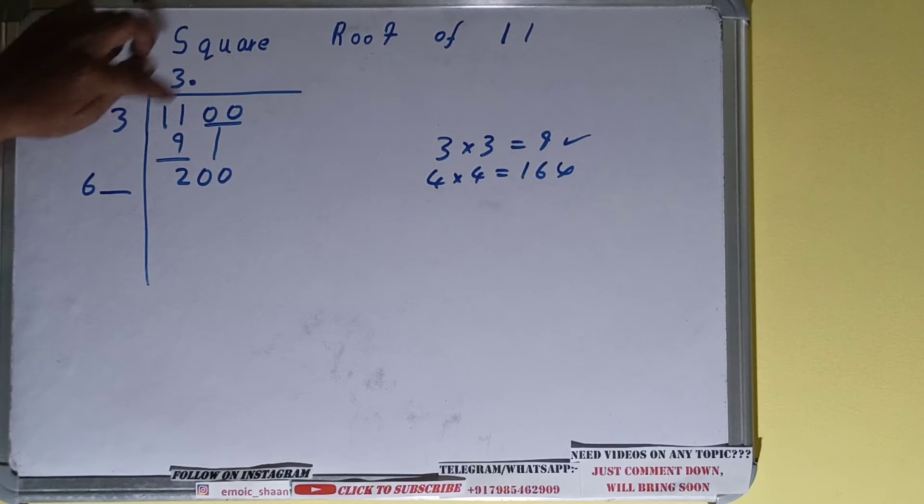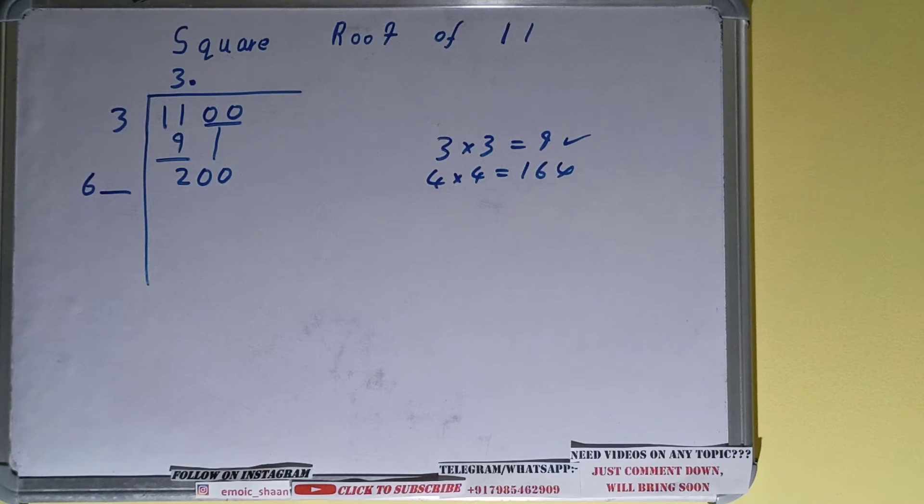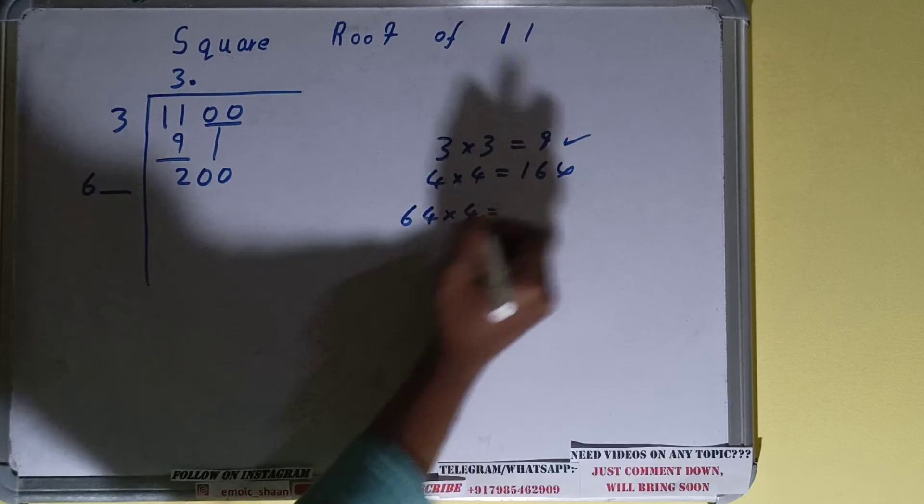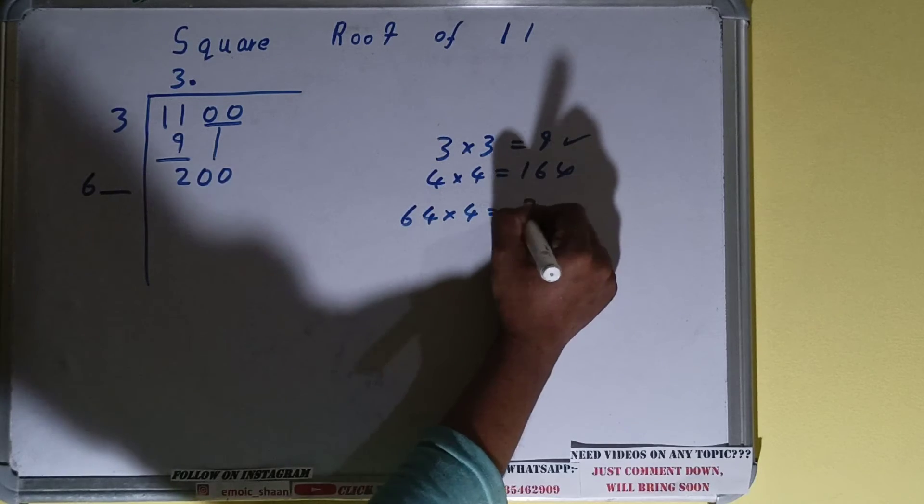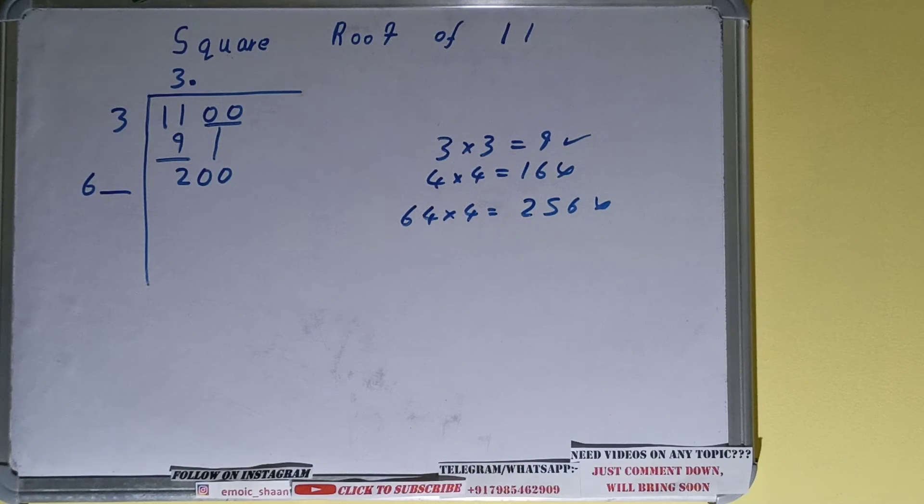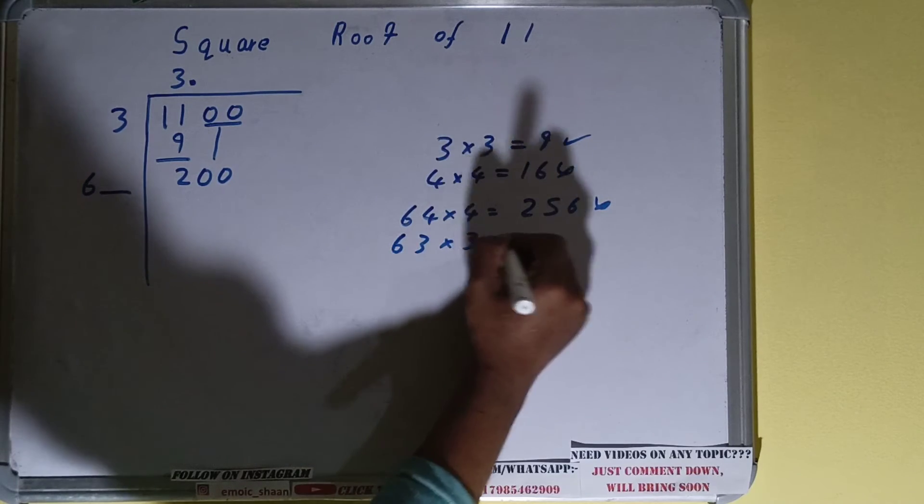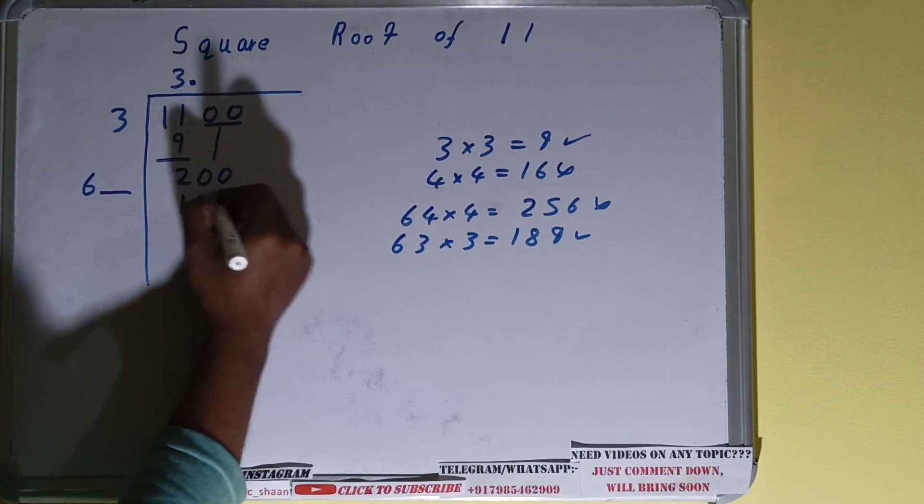Now we have to consider a number which we can place here and here also so that we get a value less than 200. Let's consider 4. 64 into 4 will have 256, which is much greater than 200, so we cannot use this. Let's consider 3. 63 into 3 we have 189. Yes, we can take this. So let's take 189 here, 3 and here 3.